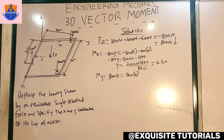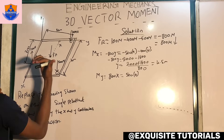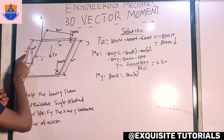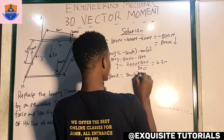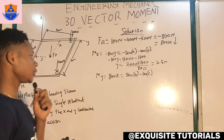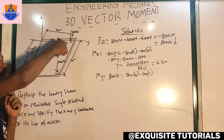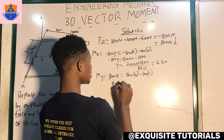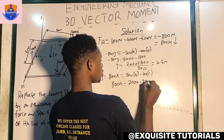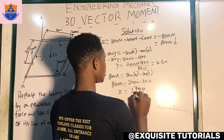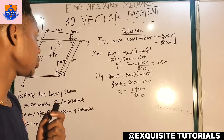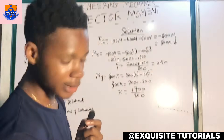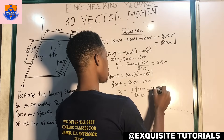The 100 newton force is going outward, going against the curled fingers, so it produces a negative moment: minus 100 times 3 meters. The 400 newton force is in line with the y-axis, so it produces a moment of zero. Simplifying: 800x equals 2000 minus 300, giving 1700. So x equals 1700 divided by 800, which gives x equals 2.125 meters.